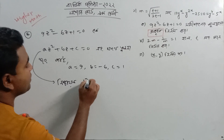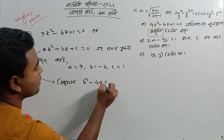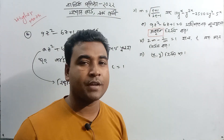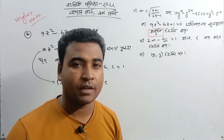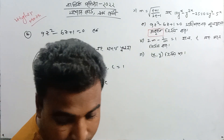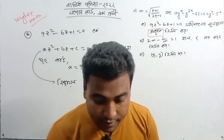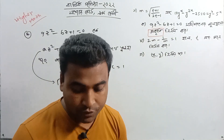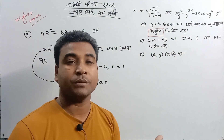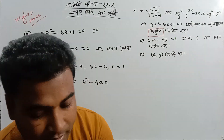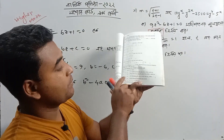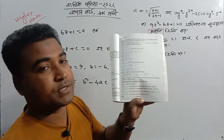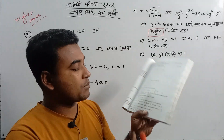I am going to write B squared minus 4ac. If B squared minus 4ac is equal to 0, then it is equal to 0. If you are equal to 0, you will be equal to 0. The second point is that the value is equal to 0. If B squared minus 4ac is equal to 0.